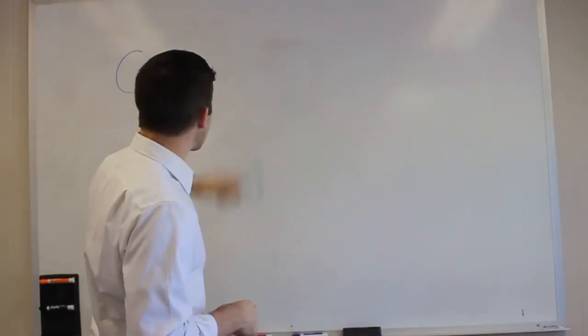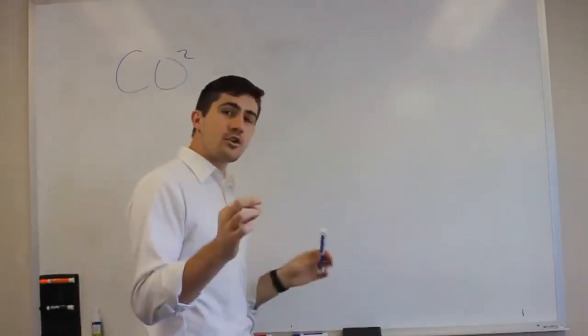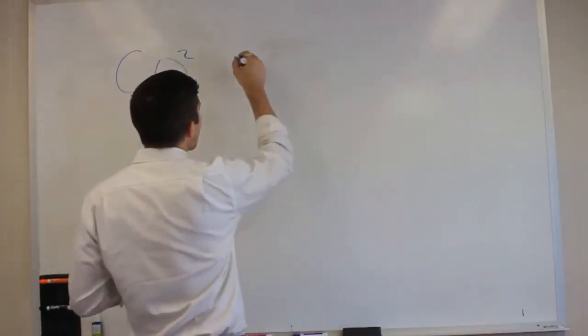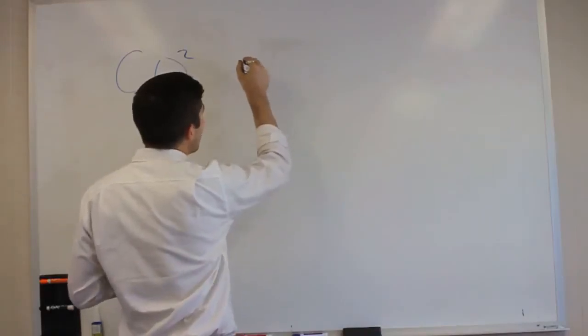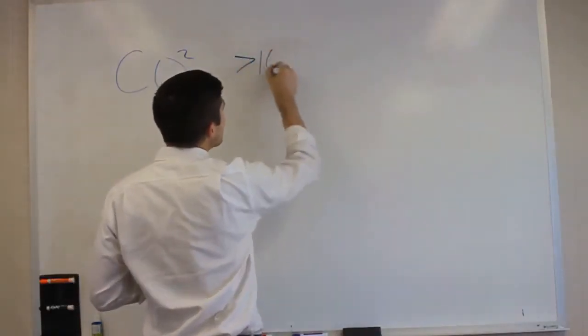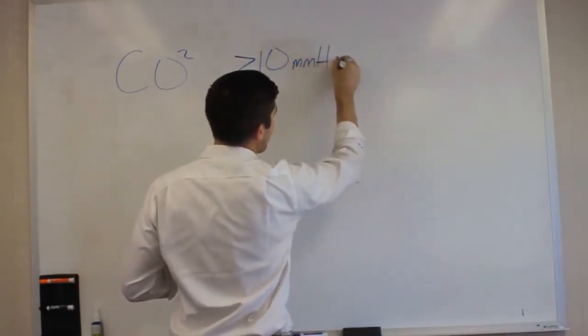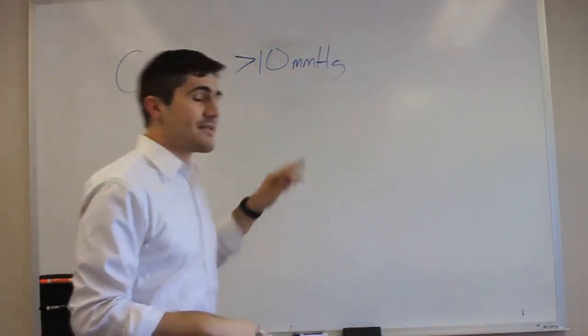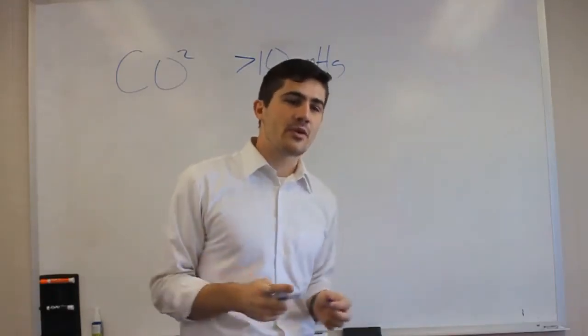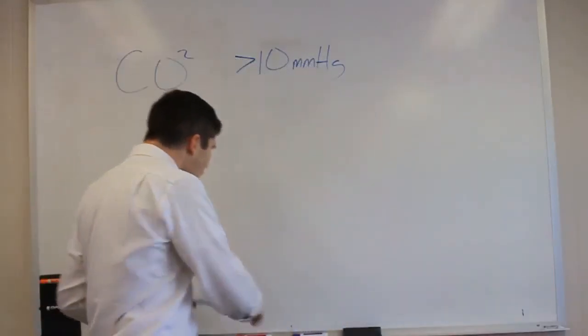So waveform capnography measures CO2, and there's a particular number we're looking for. In cardiac arrest, we want to see a CO2 level greater than 10 millimeters of mercury. If it's less than 10, there's a few things going on. Number one,